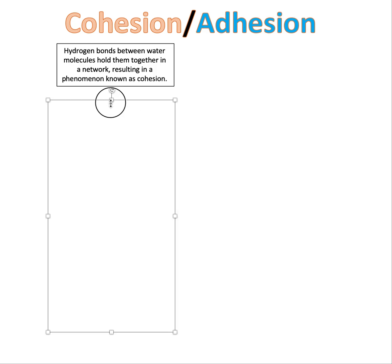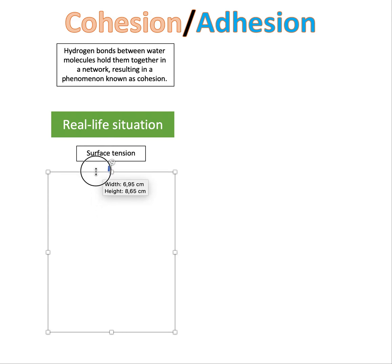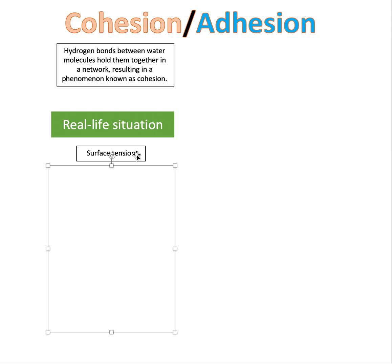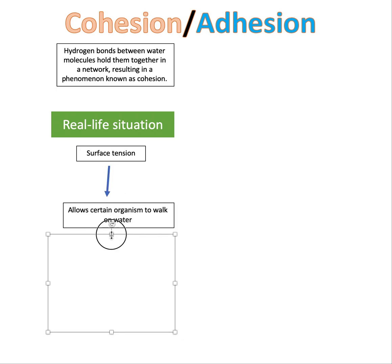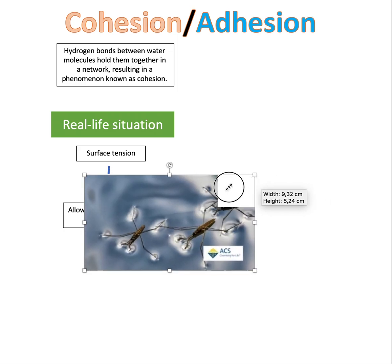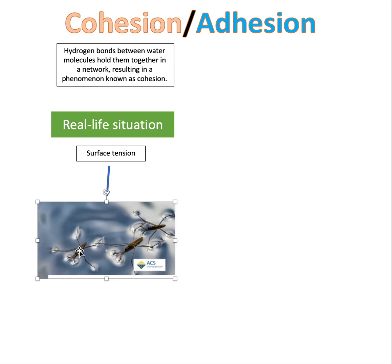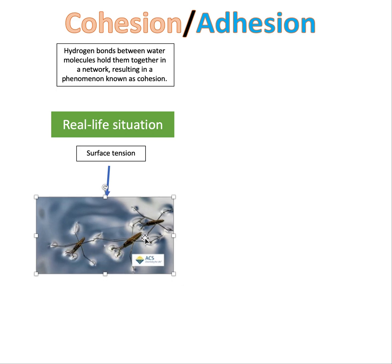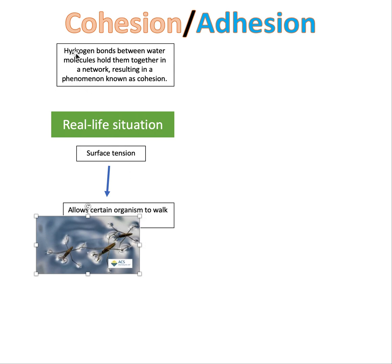A real-life example of cohesion is surface tension — basically when water is tight, when a material is tighter due to the bonding inside it. Due to hydrogen bonding, water molecules are held together more tightly, making them hard to separate, which leads to increased surface tension. This surface tension can allow certain organisms to actually walk on water. These little organisms are able to float or walk on water because they're so light and water's cohesion allows for surface tension.